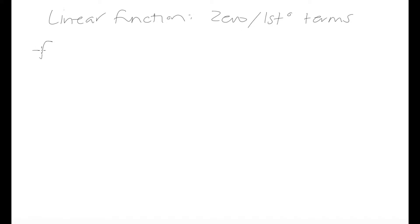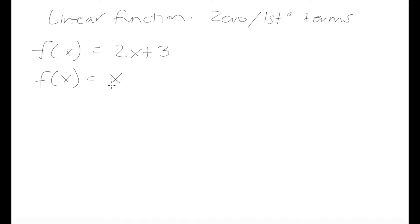Some examples of linear functions would be f(x) = 2x + 3, where we have a zero-degree term and a first-degree term. Another example is f(x) = x, which is also a linear function. And f(x) = 3 is also a linear function — here we just have a zero-degree term.